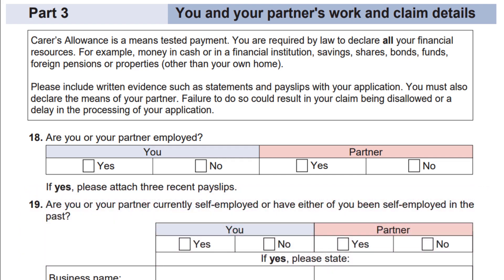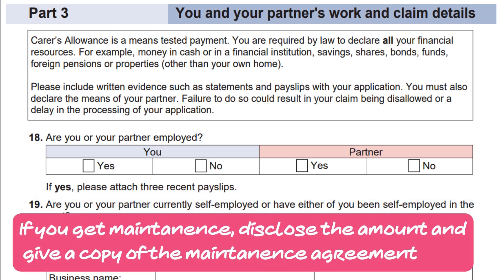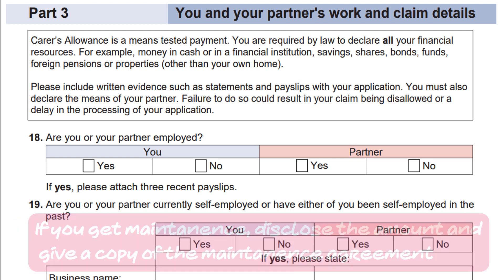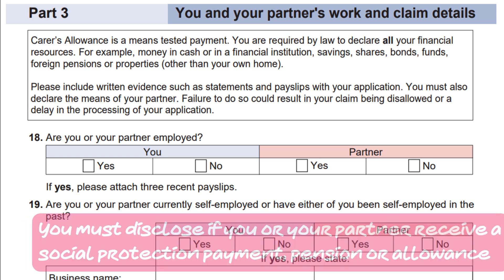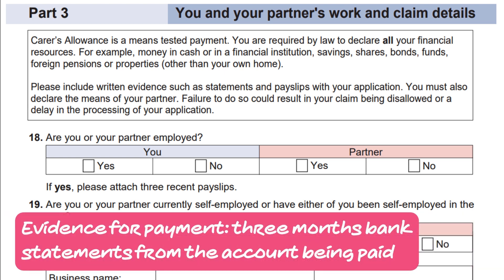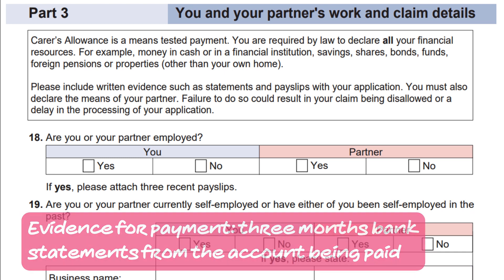If you receive maintenance, disclose the amount and give a copy of the maintenance agreement. You must disclose if you or your partner receive a social protection payment, pension, or allowance. You can provide evidence for this payment by supplying three months' bank statements from the accounts being paid.